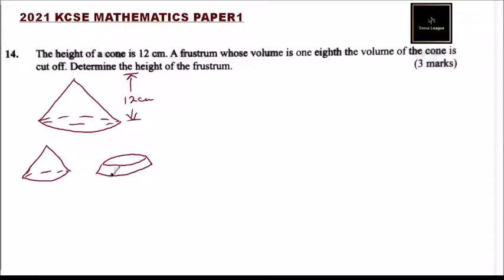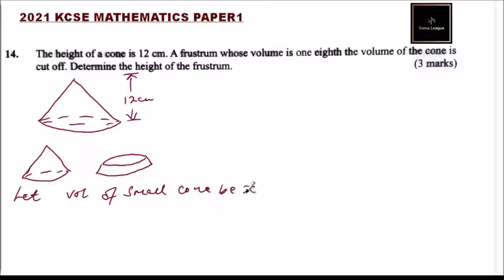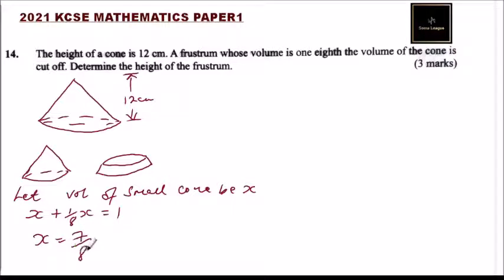We are told that the volume of the frustum is one eighth the volume of the cone. So if we let the volume of the small cone be x, this means that if you add x plus one eighth of x, that should give you one — that is the complete volume of the cone itself. This means that x equals seven over eight.